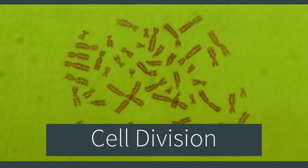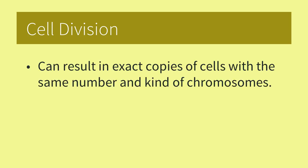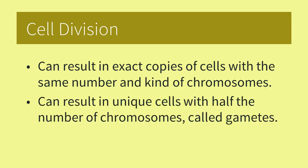Let's talk about cell division. Why do cells divide? Cells can divide and make exact copies with the same number and kind of chromosomes, or they can divide and make unique cells with half the number of chromosomes. These are called gametes.